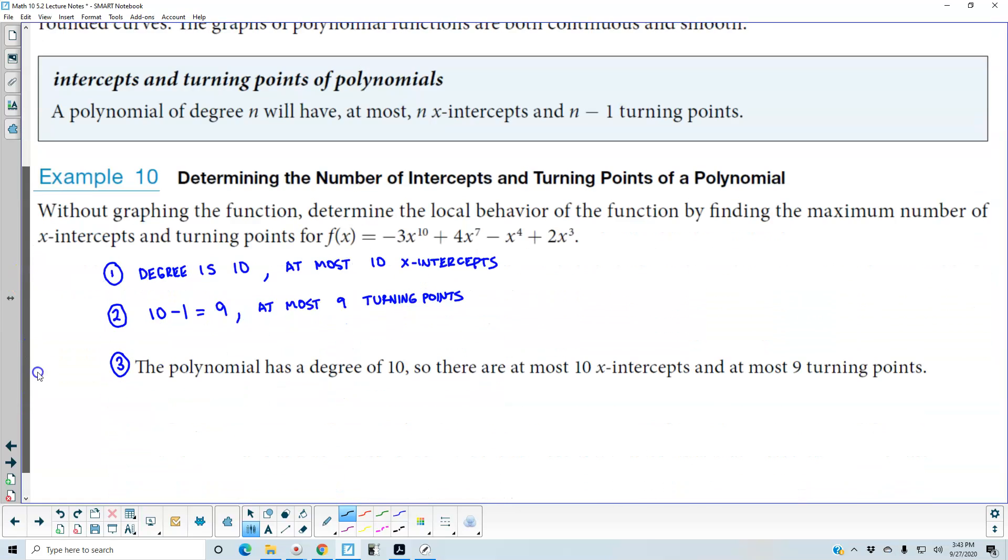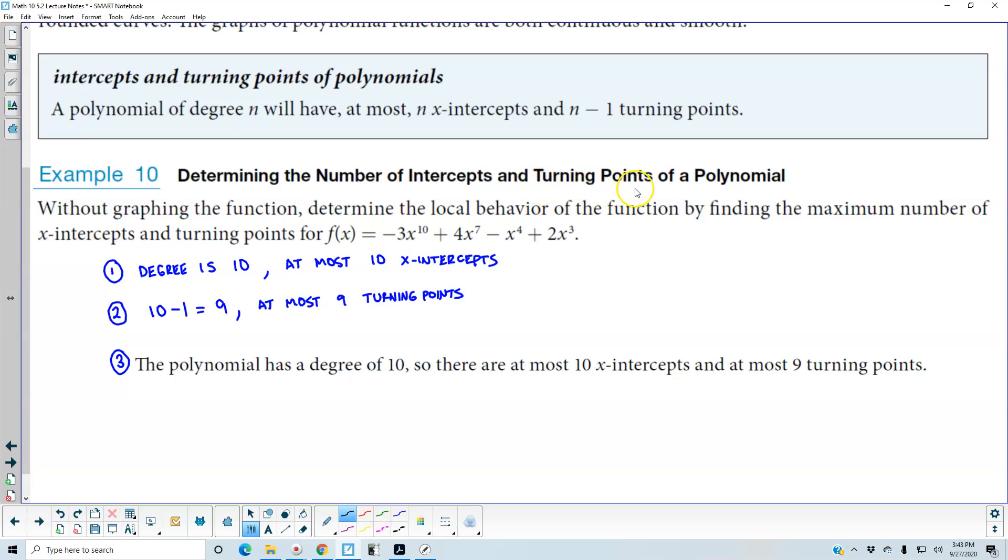For example 10, we want to determine the number of intercepts and turning points of a polynomial. Without graphing the function, determine the local behavior of the function by finding the maximum number of x-intercepts and turning points for the function negative 3x to the 10th plus 4x to the 7th minus x to the 4th plus 2x cubed.